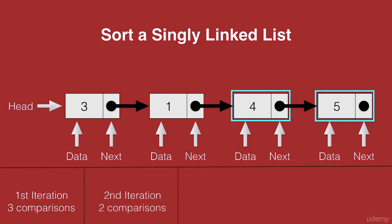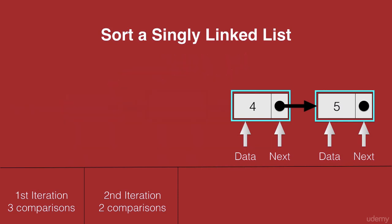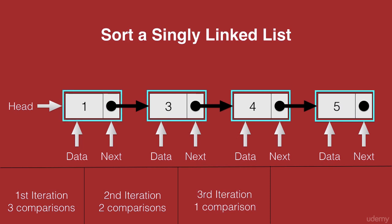Now let's start our third iteration. Let's go back to our head node, mark that as largest, and compare largest with the next of largest, which is the node with data 1. We see that 3 is greater than 1, so we swap 3 and 1 — 1 is now in place of 3, and 3 is in place of 1. We now have 3 at the last third position, which is the third largest value. In the third iteration, we made just one comparison. So now all the other nodes have been moved, our node with data 1 is at the beginning of the list, and we have a sorted list.